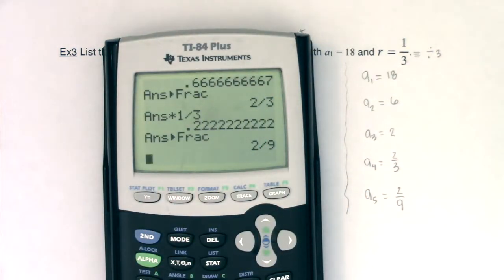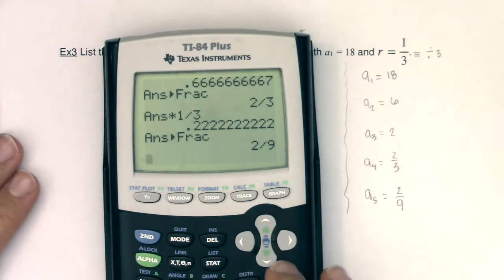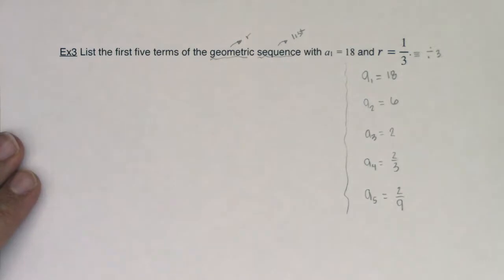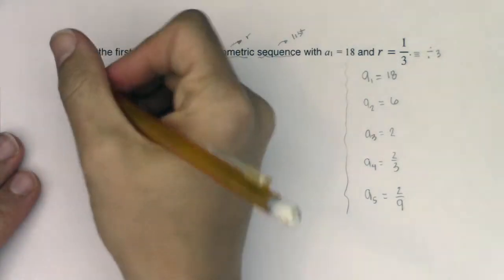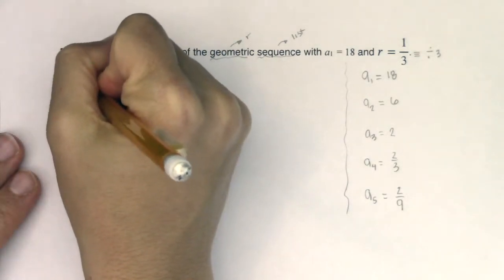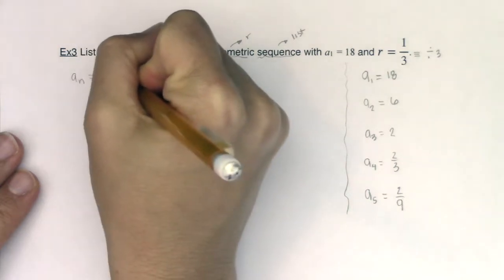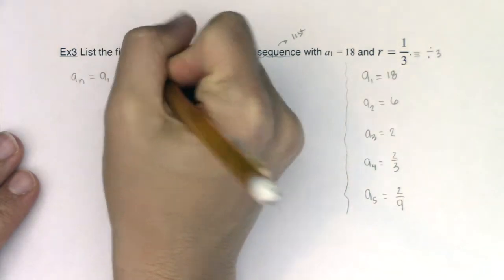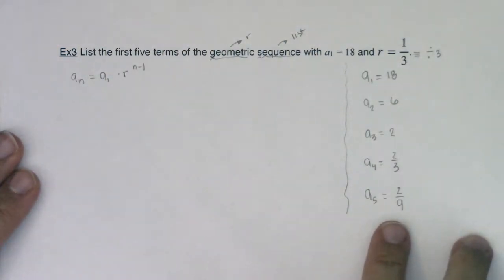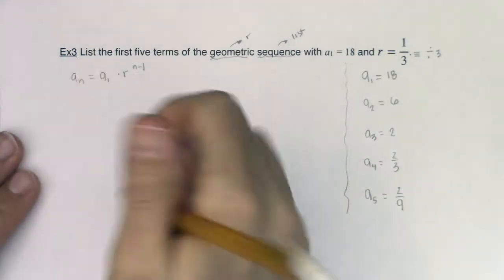Alright, now I want to show you how you can use the explicit formula for the nth term of a geometric sequence just so we can practice working it. Alright, so you know a sub n is equal to a sub 1 times r to the n minus 1. So let's regenerate this list using this explicit formula.